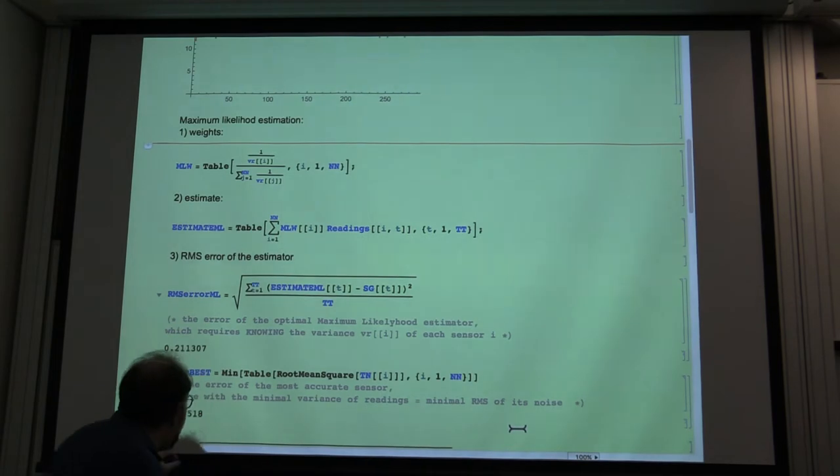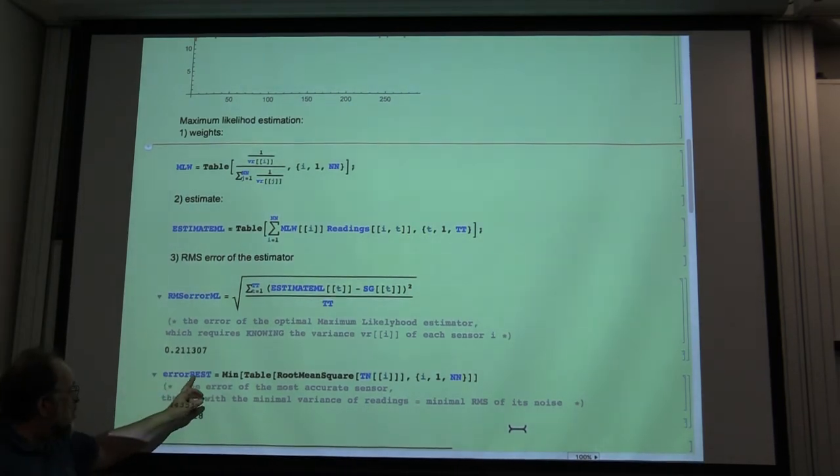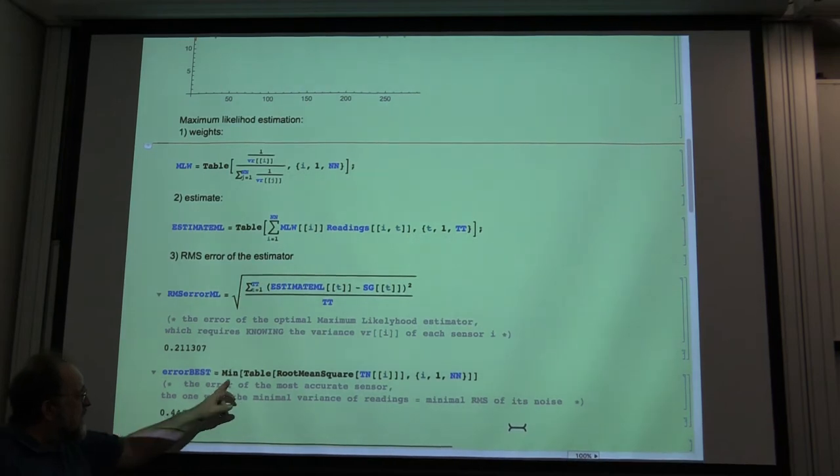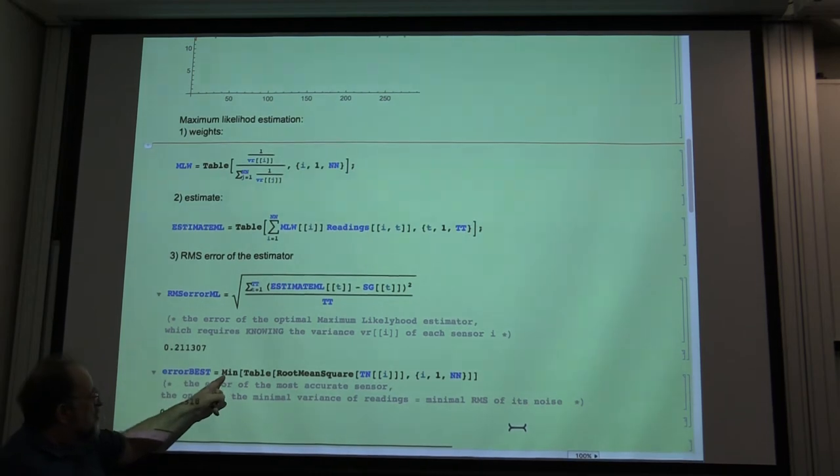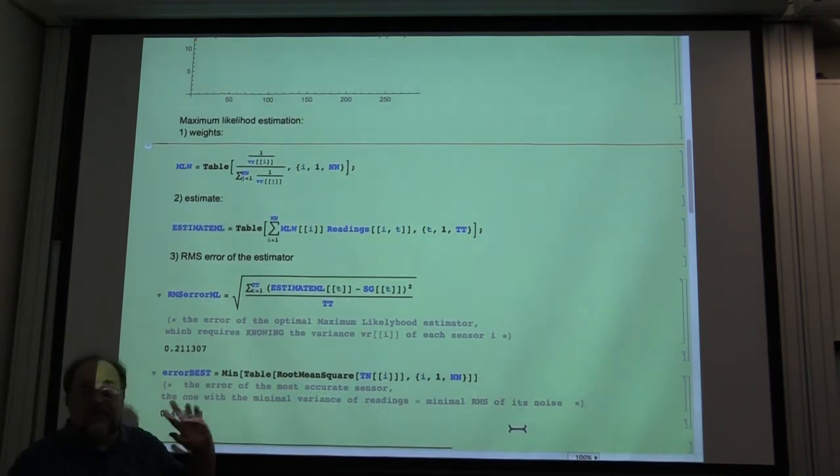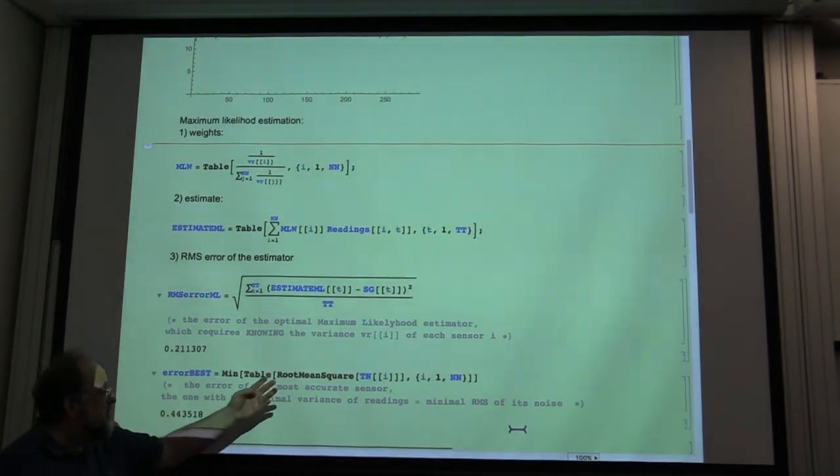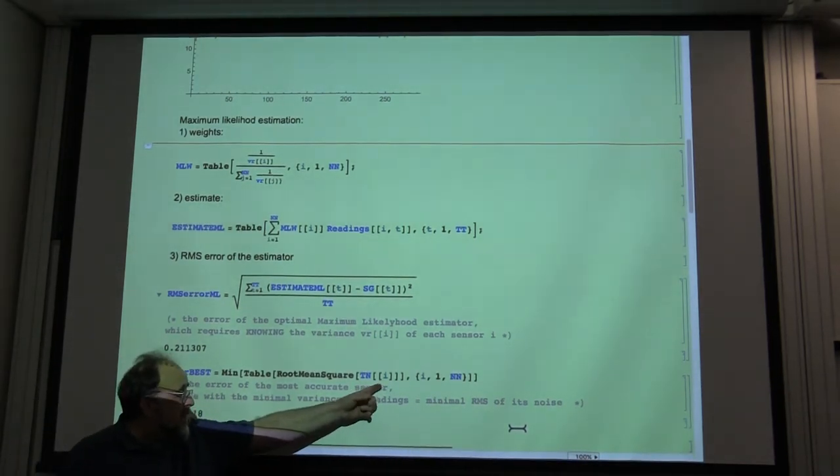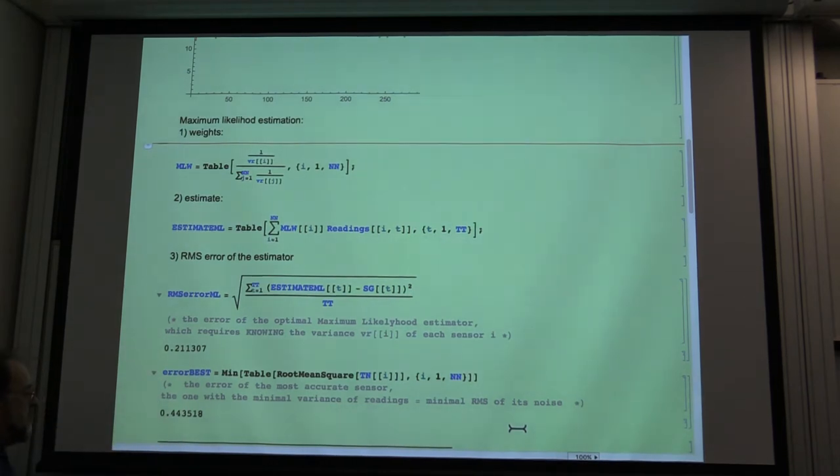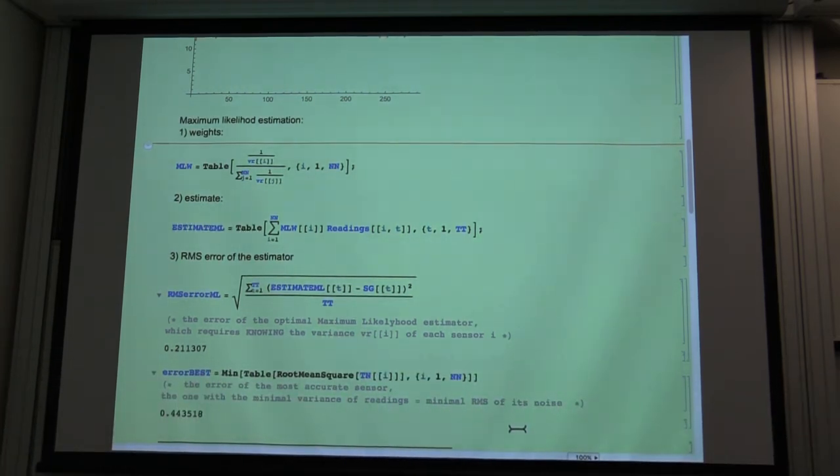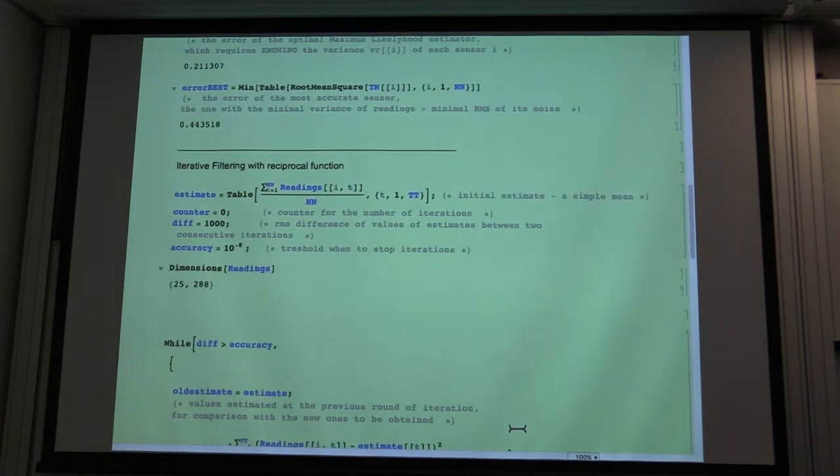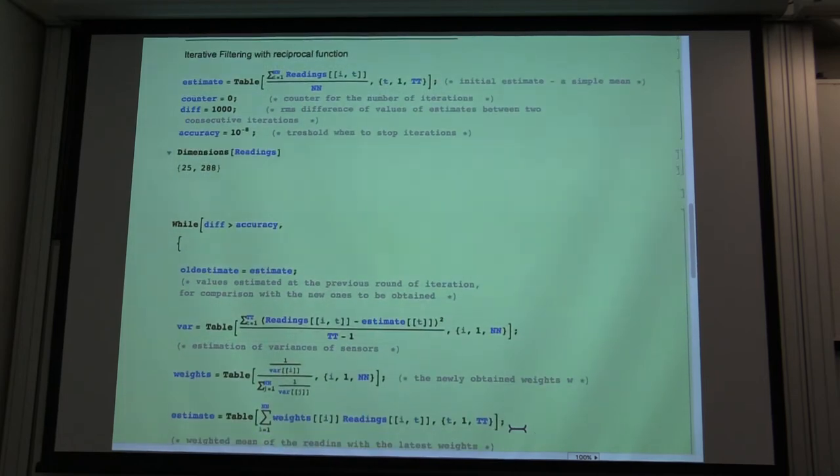Okay, on the other hand, we take the error of the best, that is simply the RMS value of the noise, which is the smallest. So we pick the sensor with the smallest variance. So then what do we do? This gives the gold standard, the maximum likelihood estimation. And now we run our algorithm.